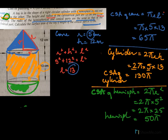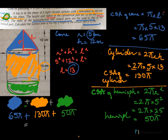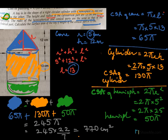Now we add up all three: cone = 65π, cylinder = 130π, hemisphere = 50π. Total = 65π + 130π + 50π = 245π. Substituting π = 22/7, we get the answer as 770 cm².